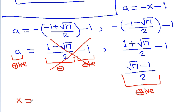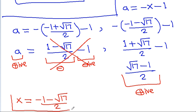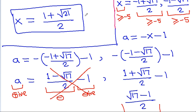So x can equal minus 1 minus the square root of 17 by 2, which is positive. This is one value of x and (1 + √21)/2 is the second value of x.